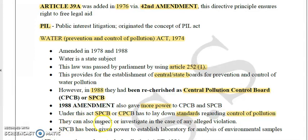CPCB and SPCB can also inspect or investigate in the case of any leak or violation. If there is any kind of violation, they have the power to investigate and provide a decision on it. SPCB has been given the power to establish a laboratory for the analysis of environmental samples. The Central Pollution Control Board has more power than SPCB. SPCB has to submit their reports to CPCB, and CPCB can help SPCB to set standards.